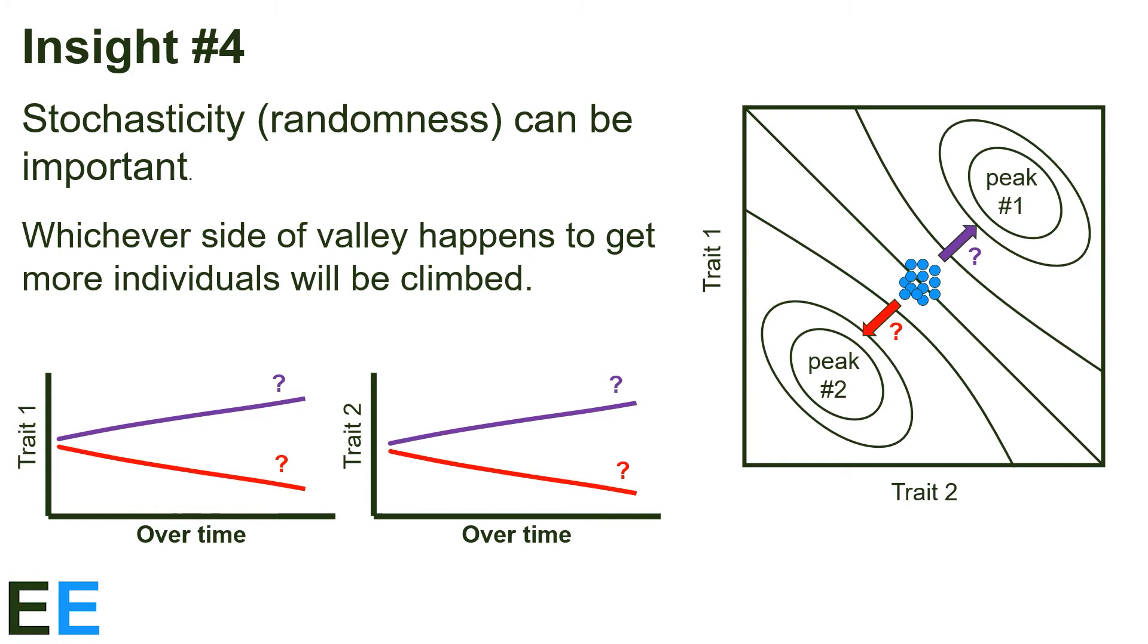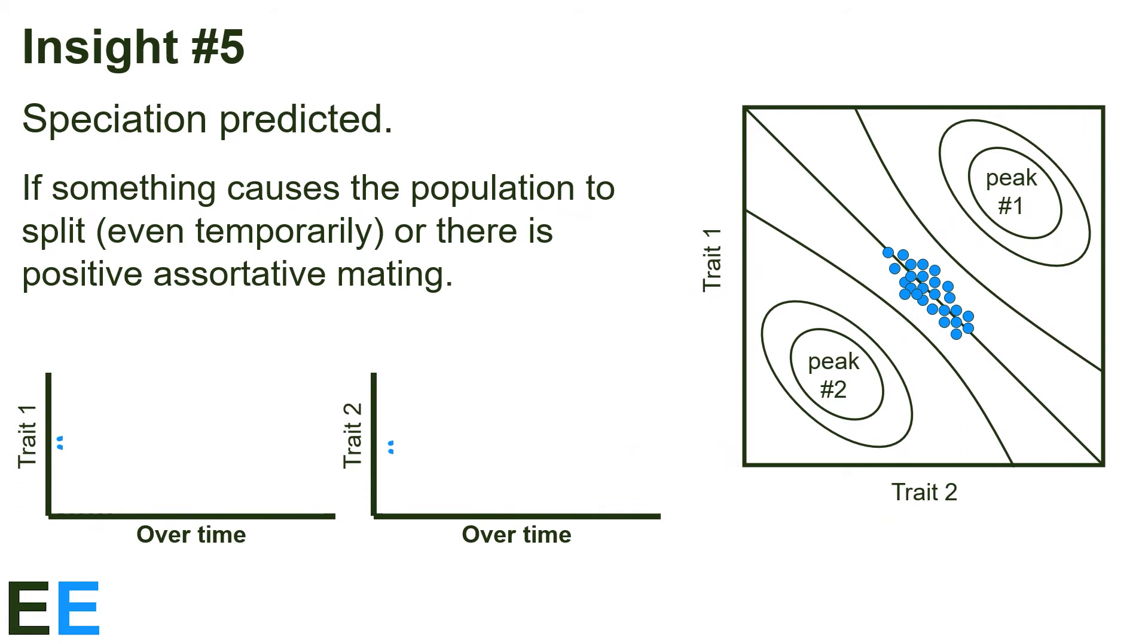You can even imagine that if there were multiple populations in this same situation, some might evolve one way and others might evolve the other.